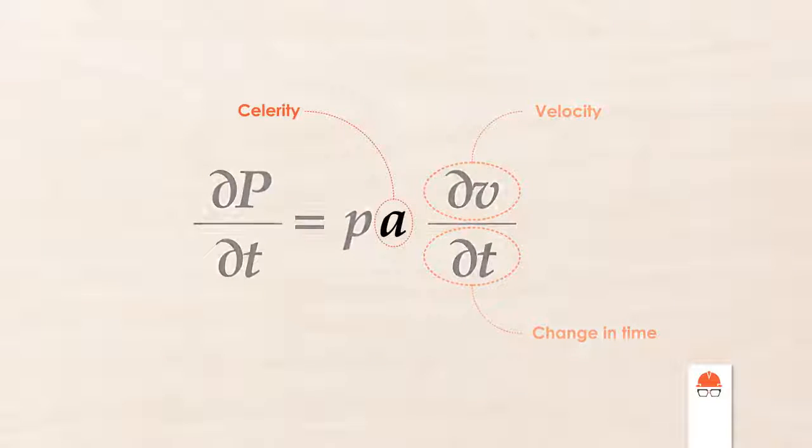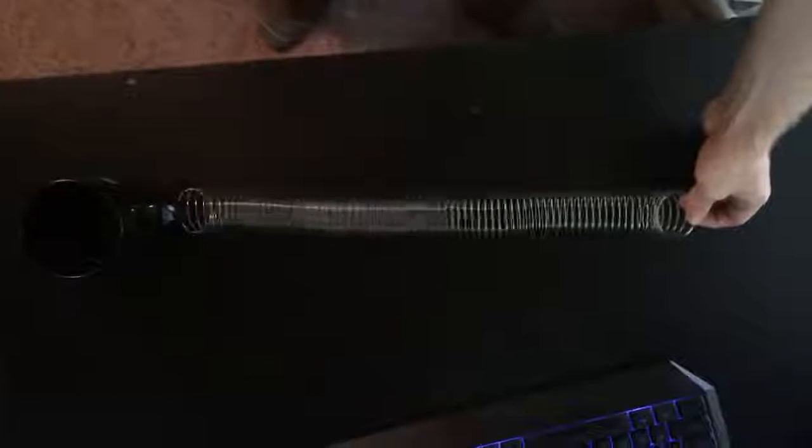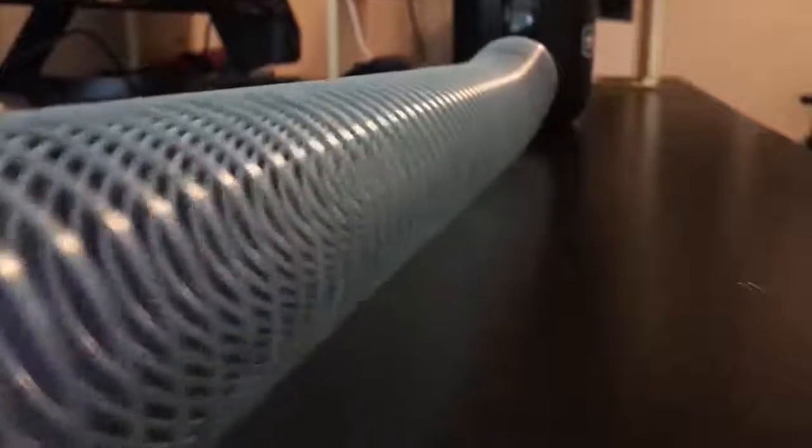The final parameter we can adjust is the speed of sound through the fluid, also known as wave celerity. This describes how quickly a pressure wave can propagate through the pipe. The wave celerity is an indirect measure of the elasticity of the system, and it can depend on compressibility of the fluid, the material of the pipe, and whether or not it's buried in the ground.